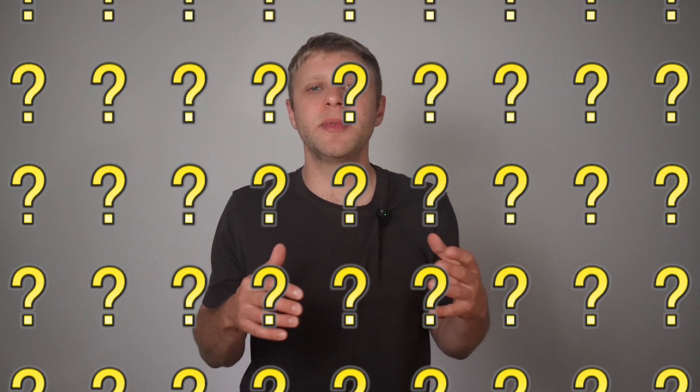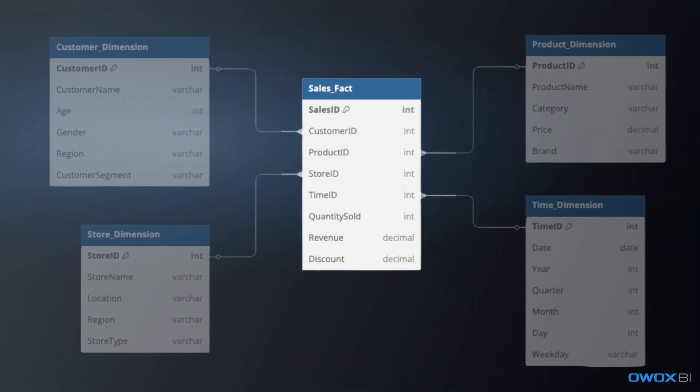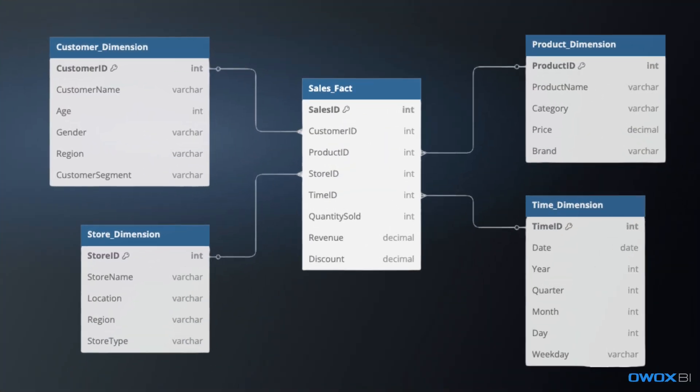Let's break down the Star Schema. What is it in data modeling? Think of it as a go-to blueprint for organizing business data in a way that's simple, works fast, and is built for reporting. You've got one big central table — the heart of it — the fact table. This is where all the numbers live: sales amounts, quantities, profits. And surrounding it, a handful of dimension tables — like customers, products, dates, and origins — that give context to those numbers. The structure looks like a star, which is how it got its name.